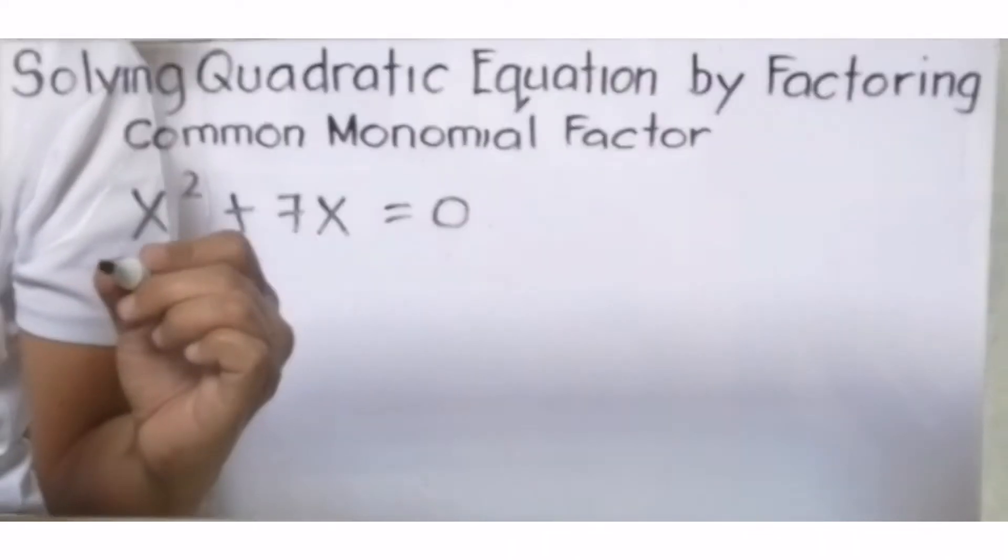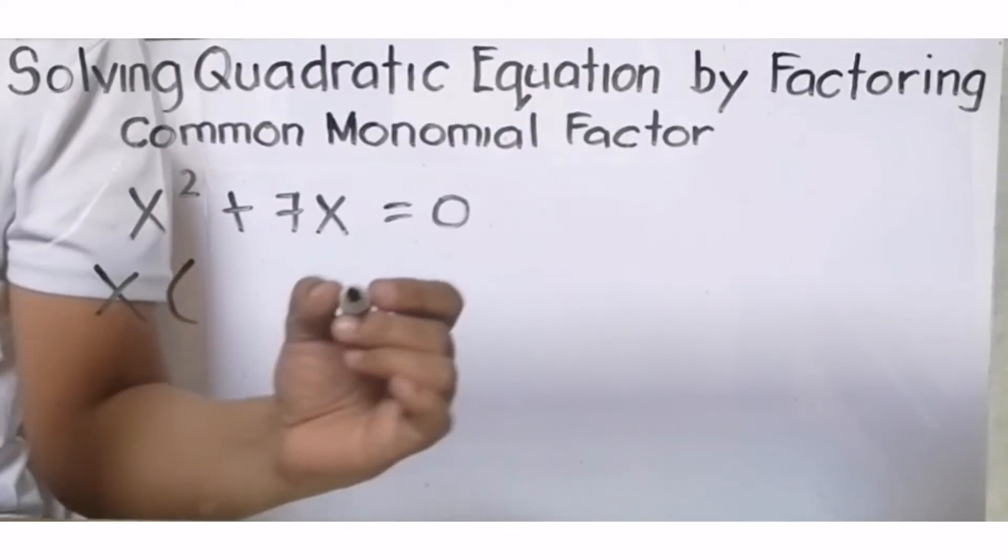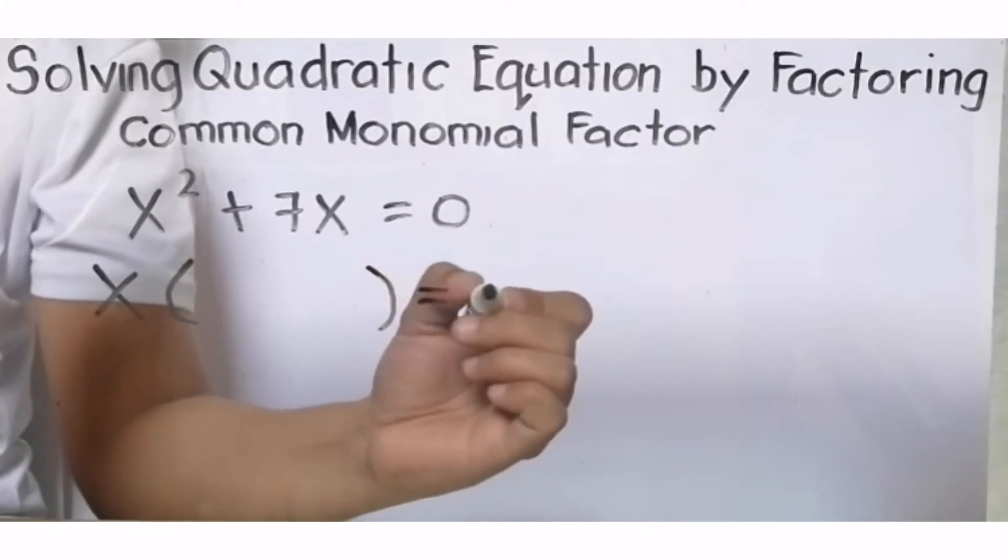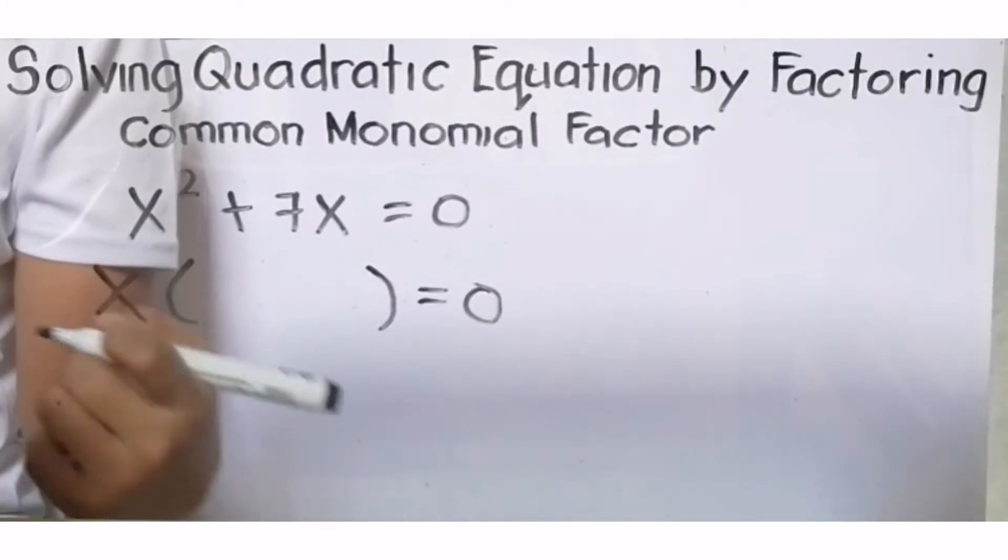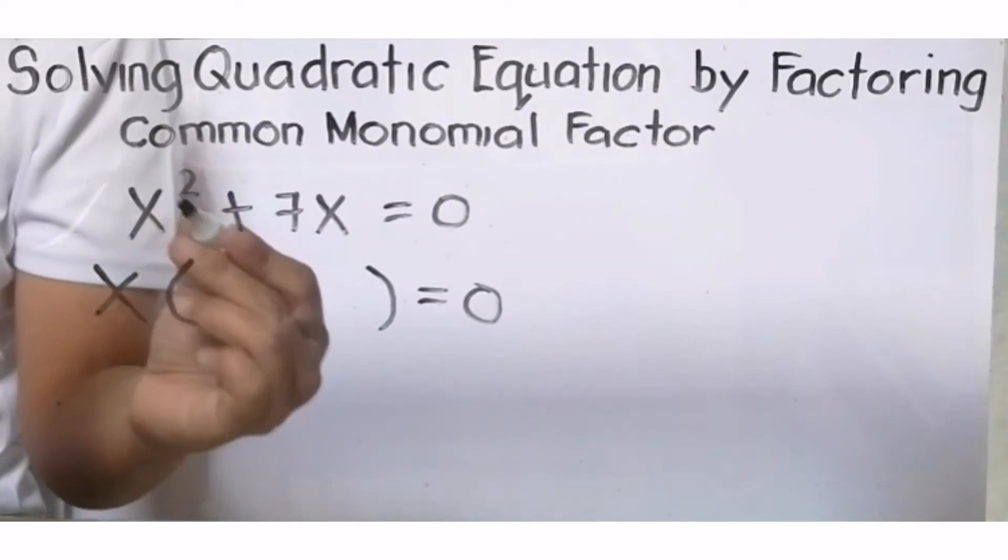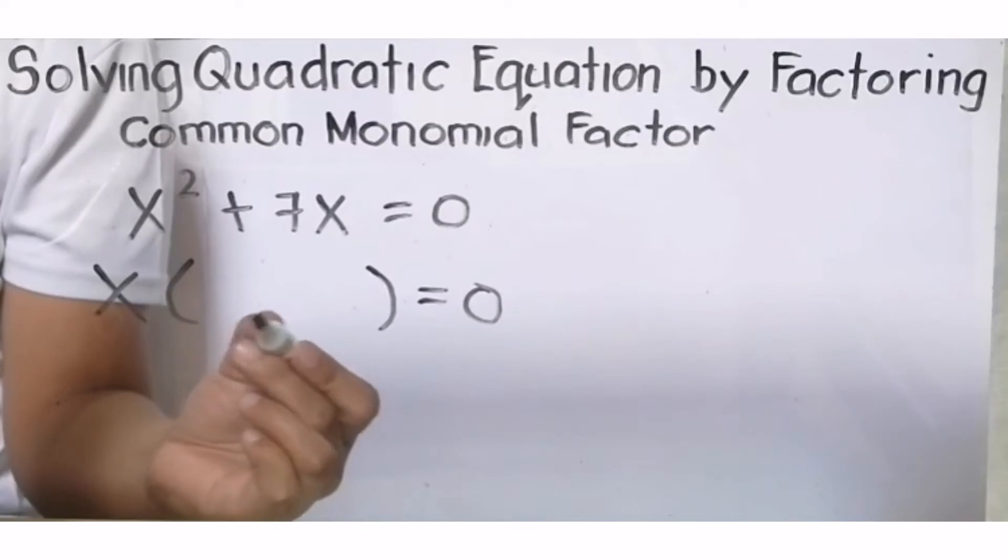Both have x, ilabas na natin. Mag-ready na tayo ng ating parenthesis equals 0. I-divide natin ang x² by x para makuha natin kung ano yung maiiwan dito sa loob ng ating parenthesis.